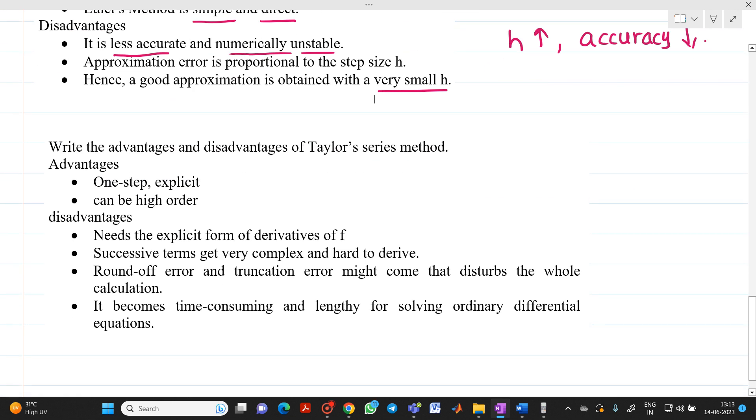What are the disadvantages of Taylor series method? Already we have gone through it. We need to find derivatives of higher order terms. Then successive terms get very complex and hard to derive. There might be some chances of round-off errors and truncation error, which disturbs whole calculation.